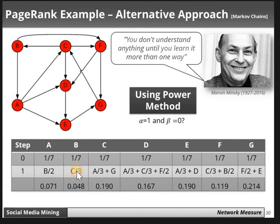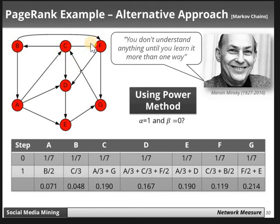For vertex B, we check its incoming edges. The incoming edge to B is from vertex C. The number of outgoing edges of C is 3, so the contribution is C/3. C's value is 1/7 multiplied by 1/3, which is 1/21, giving approximately 0.048.